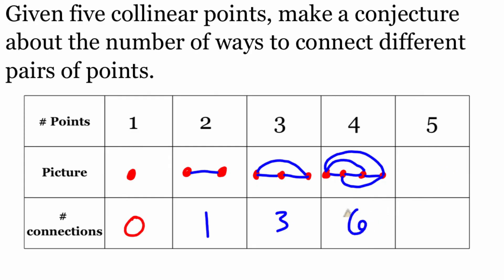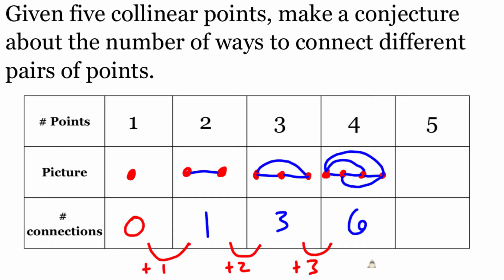Now I'm going to see if we can spot a pattern before drawing five points. Looking at the connections: zero, one, three, six. Going from zero to one we added one connection, from one to three we added two, and from three to six we added three. So continuing the pattern, I would guess we add four connections next. Let's draw the picture and see what happens — we've got one, two, three, four, five points.